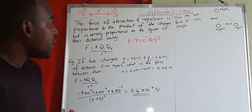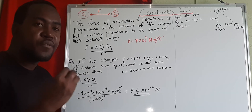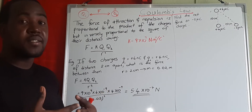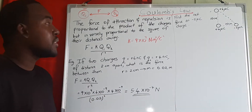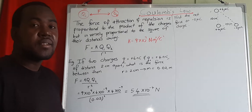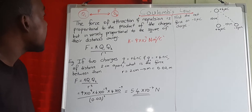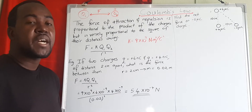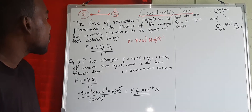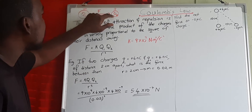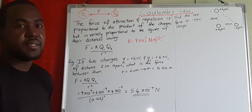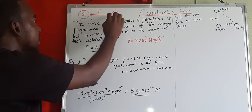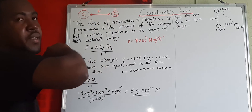Coulomb's Law explains the force between two charges when their electric fields touch. Once their electric fields touch, they experience that force. The law states that the force of attraction or repulsion is proportional to the product of their charges and inversely proportional to the square of their distance apart. For example, if q1 is negative and q2 is positive, there is a force of attraction between them, which we call F.